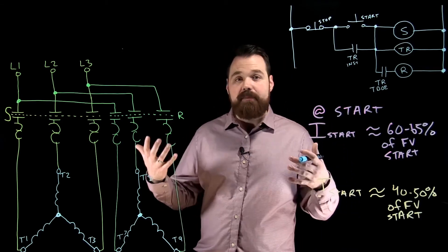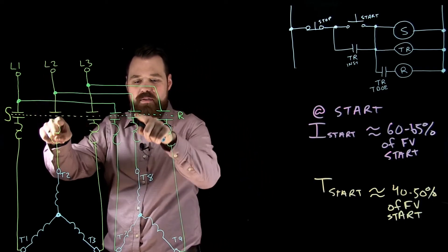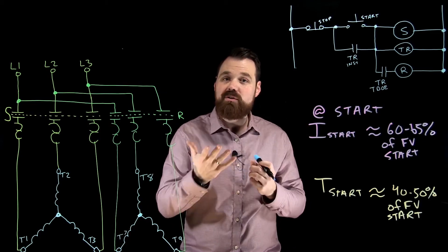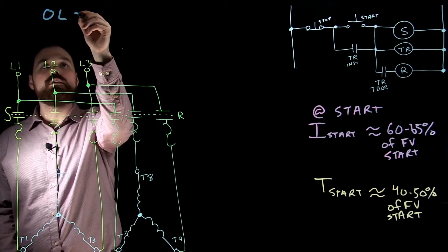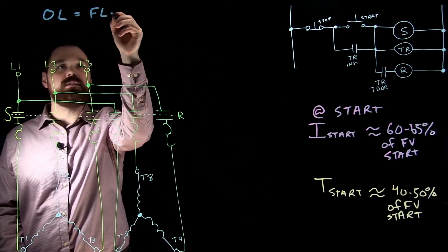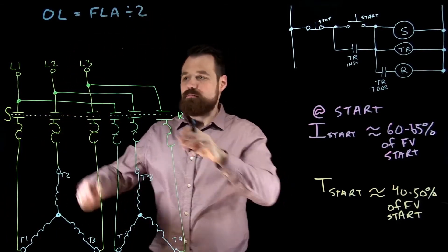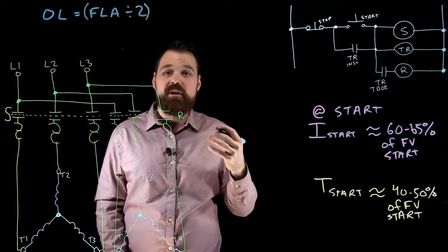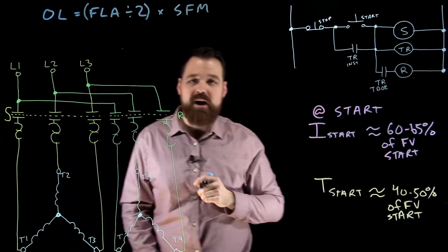So basically, when we look at this, if I'm current and I come down line two, I'm splitting into two and then going through two separate overloads. So in order to size our overloads, what we are going to do is we're going to take our FLA, our full load current, divide it by two because there's those two paths for current to flow, then we're going to multiply it by whatever our service factor multiplier is.